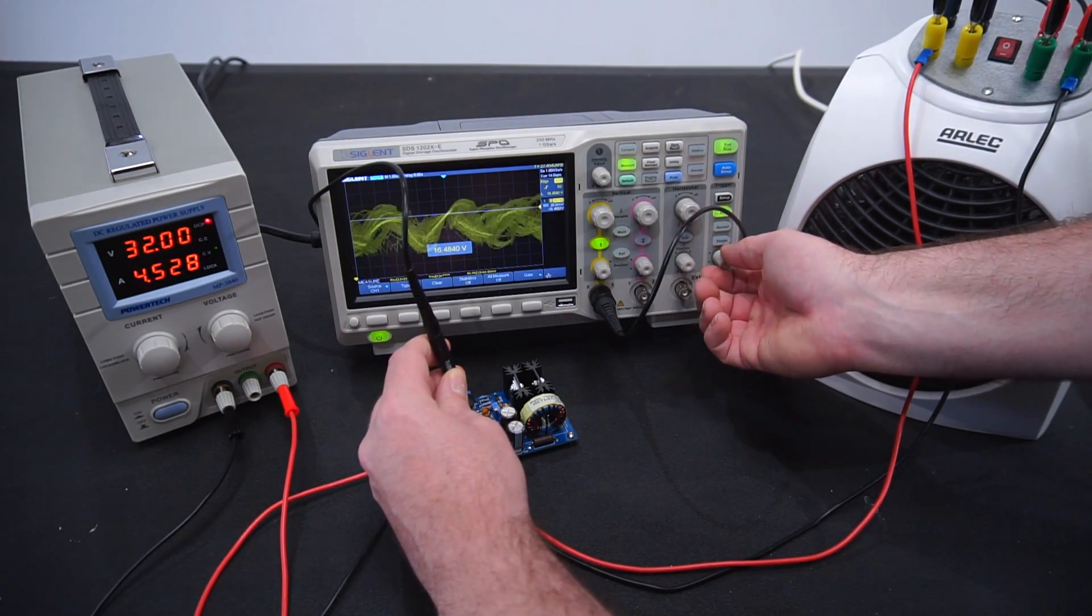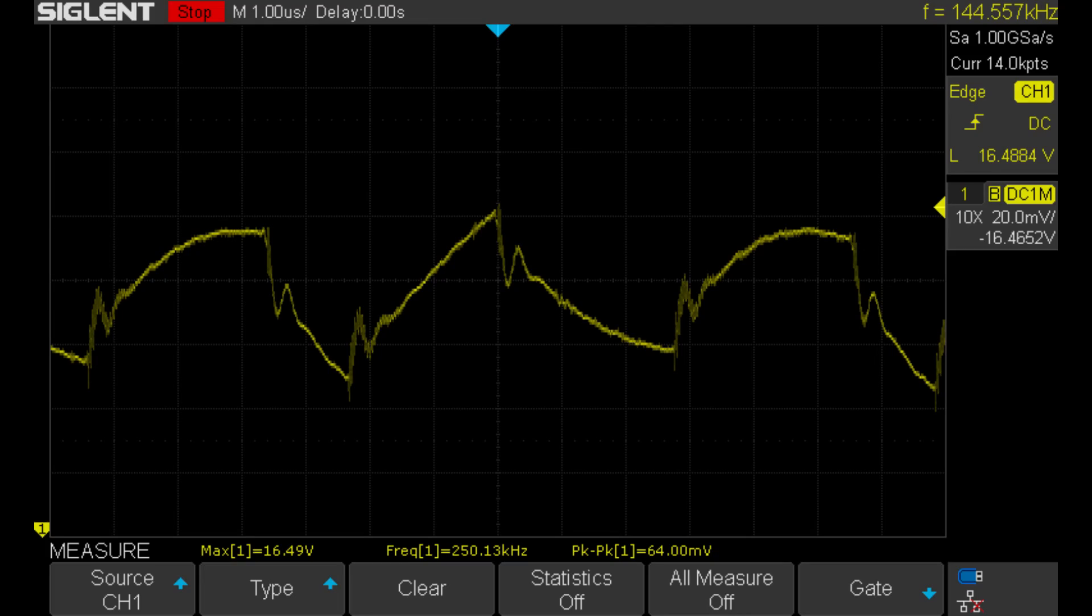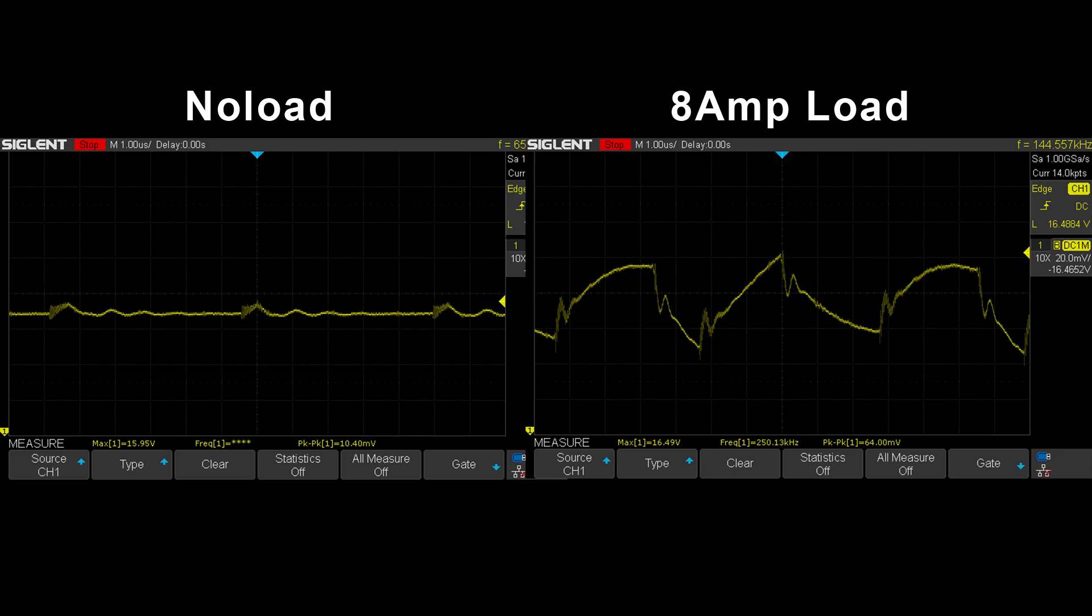Now I can inspect the waveform using my scope. With a full 8 amp load the voltage ripple is now up to 64 millivolts. Compared to before with no load obviously the ripple has increased. But all things considered 64 millivolts of ripple is still very good, especially for an 8 amp load.